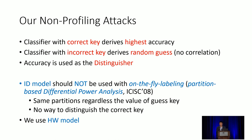One important note: we use the Hamming weight model. If you use the identity model for on-the-fly labeling or partition-based differential power analysis, it doesn't matter what the value of your key guess is — every time you have the same partitions over those unlabeled traces and there is no statistical difference among all 256 key guesses.